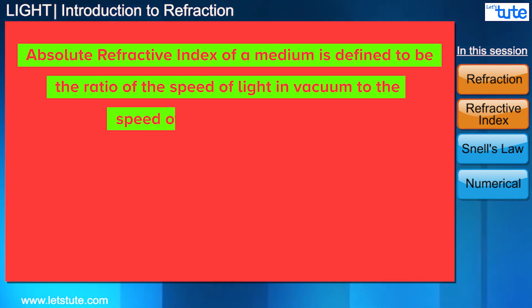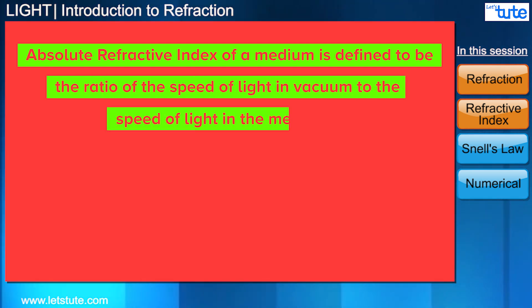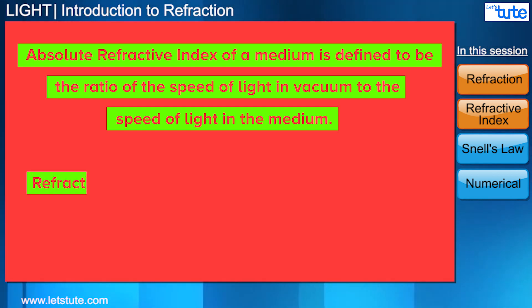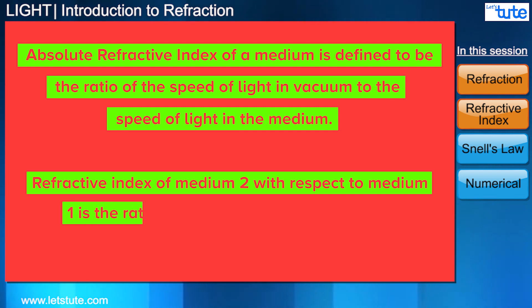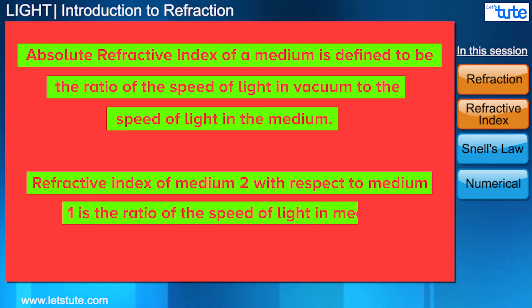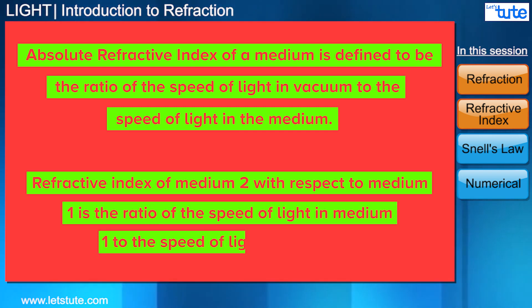The absolute refractive index of a medium is defined as the ratio of the speed of light in vacuum to the speed of light in the medium. Similarly, the refractive index of medium 2 with respect to medium 1 is the ratio of the speed of light in medium 1 to the speed of light in medium 2.